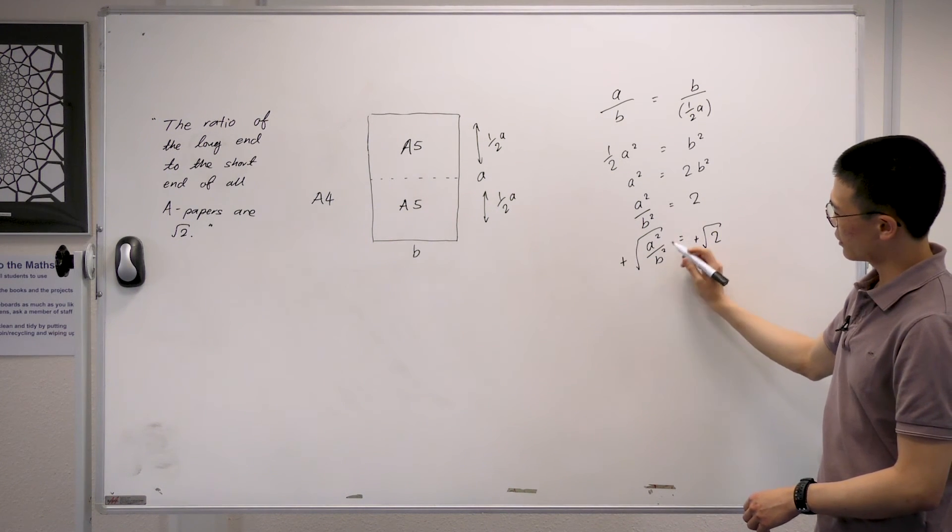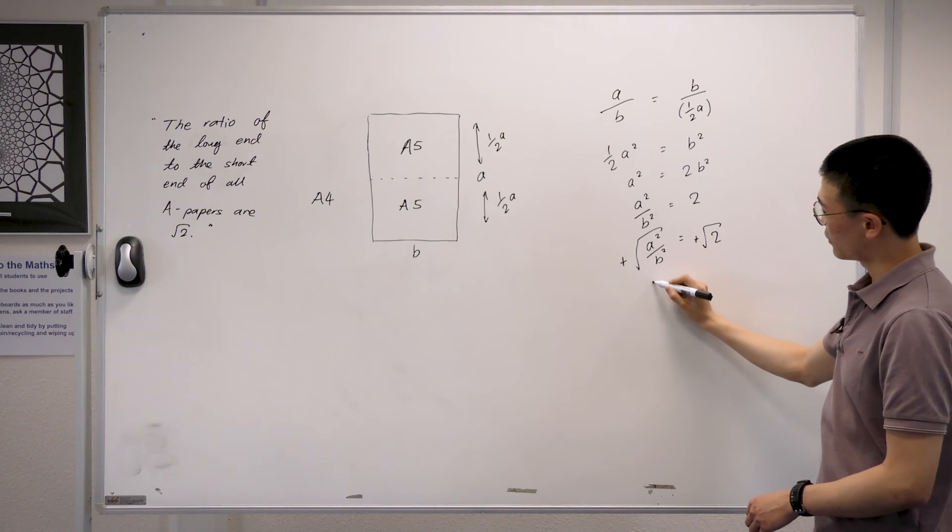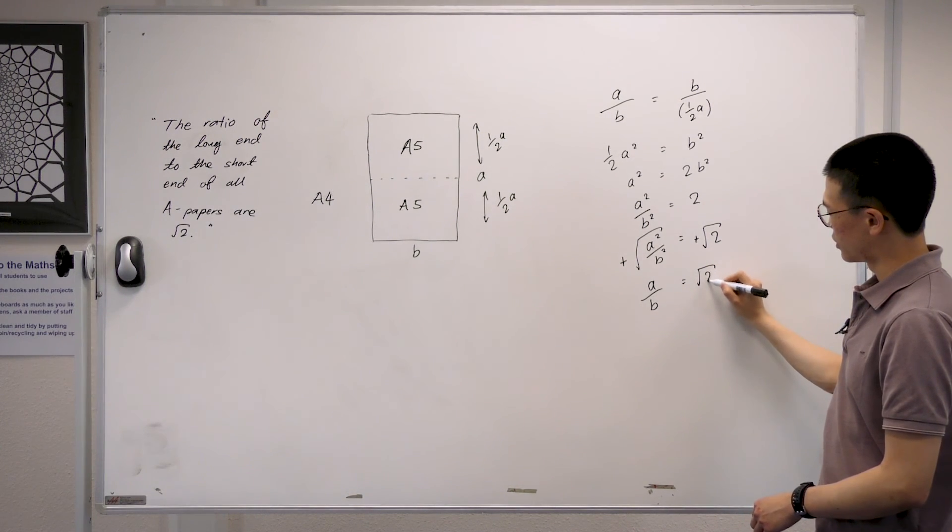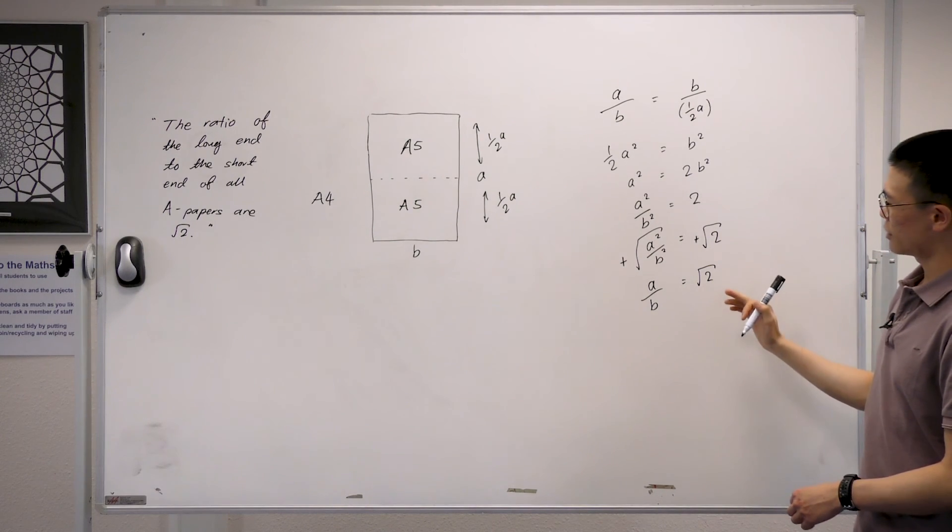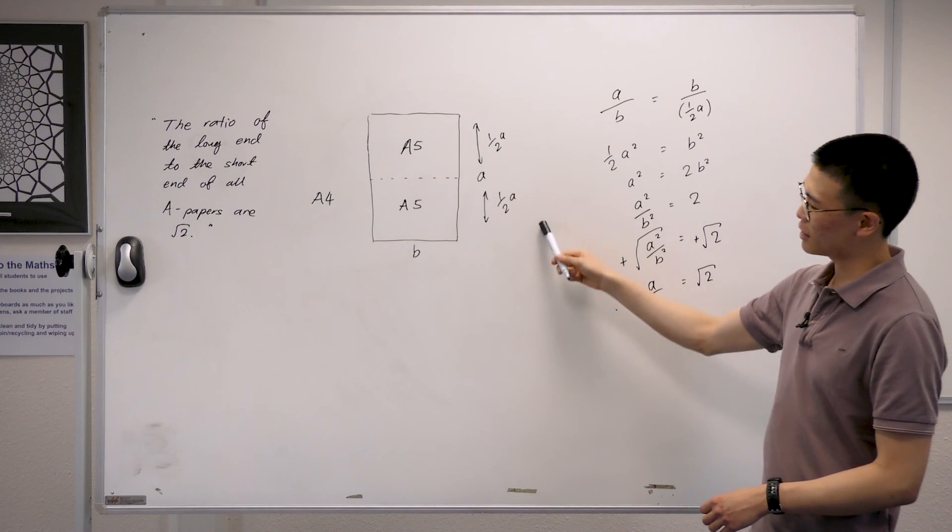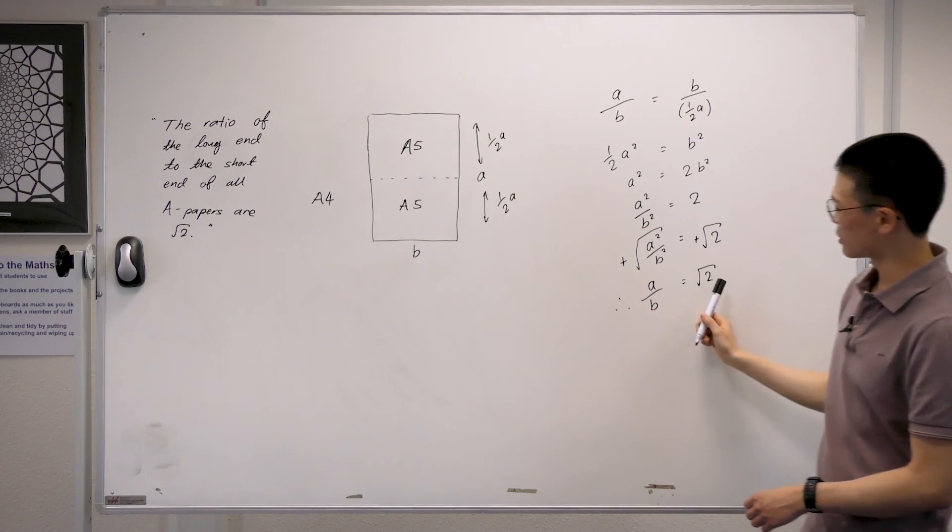So taking the square root of A squared over B squared, we simply have A over B. And this is just the root of 2. And hence, we've come to the conclusion that the ratio between the long end to the short end is square root of 2.